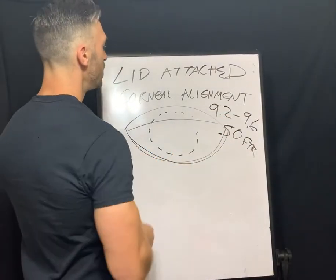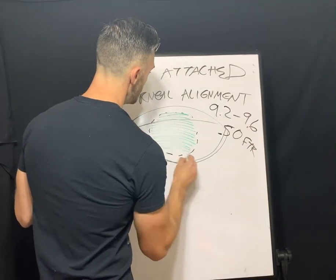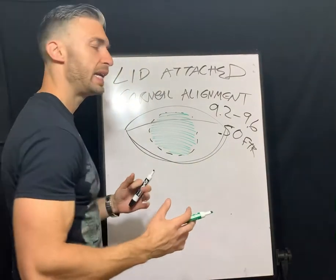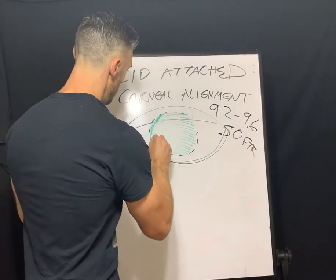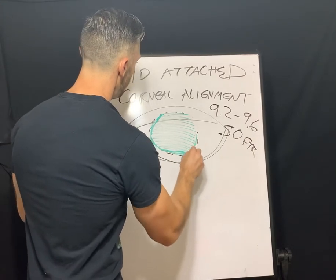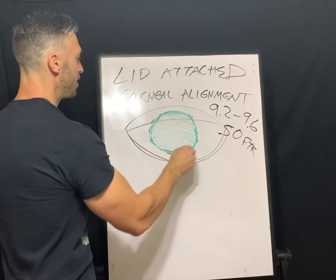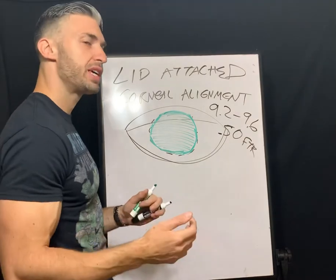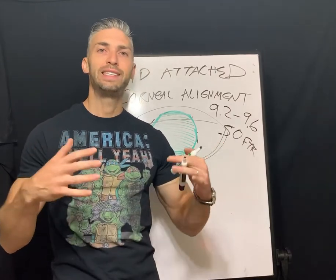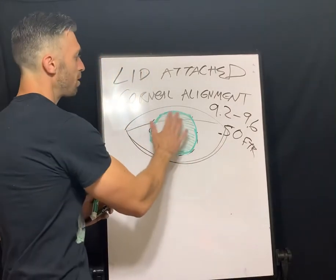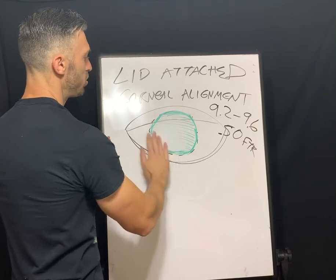With the fluorescein pattern for corneal alignment, you want a very consistent, light fluorescein pattern throughout — no excessive pooling anywhere and no excessive bearing. You still need about one millimeter of edge clearance around the periphery, even and consistent. If the edge clearance is too thin you could see blanching, which means it's too tight. Good tear exchange is essential.